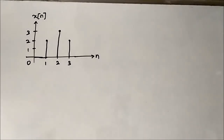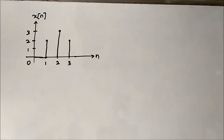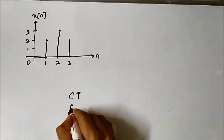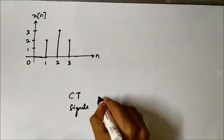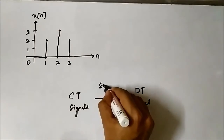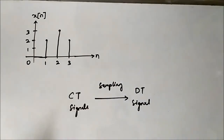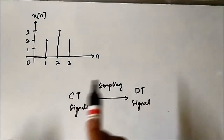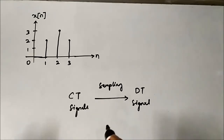Hello friends, welcome to Engineering Tutorial. In the previous videos we discussed amplitude scaling of continuous time signals. In this video we are going to discuss the same concept but with discrete time signals. Continuous time signals are converted into discrete time domain signals through a process called sampling — this is the whole process of conversion of analog signal into digital form through sampling, quantization, and encoding.